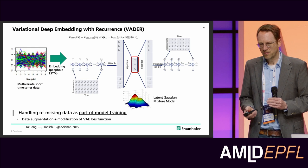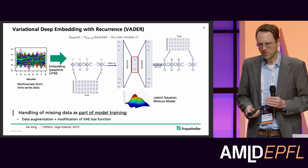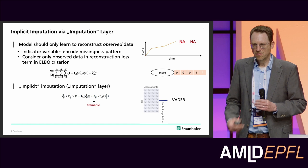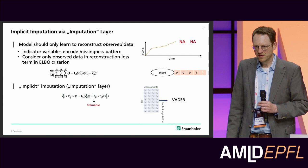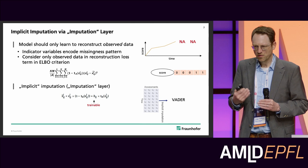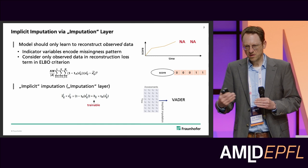Another important aspect is handling missing data directly as part of model training, which requires a modification of the loss function. More specifically, via our so-called imputation layer — a layer present before the LSTM encoder — we aim to learn to reconstruct only the observed data. For this purpose, we introduce certain indicator variables that encode the missingness.